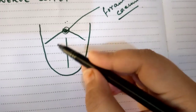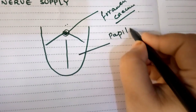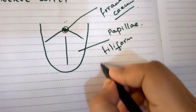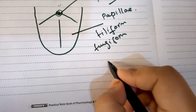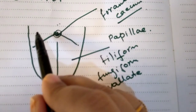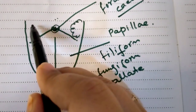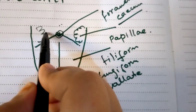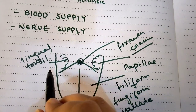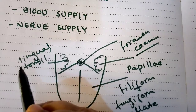The anterior two-thirds of the tongue has papillae. Three types of papillae are present on the anterior surface: filiform papilla, fungiform papilla, and vallate papilla. The posterior part of the tongue is devoid of any papillae, but the rough surface posteriorly is due to the presence of lingual tonsils.